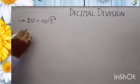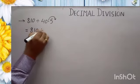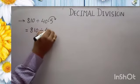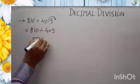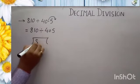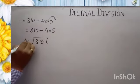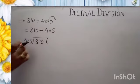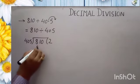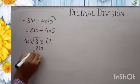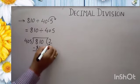Your statement will become 810 divided by 405. Start division: 810 divided by 405. 405 twos are 810, and there is no remainder left. The answer is 2.